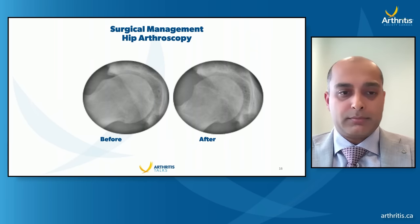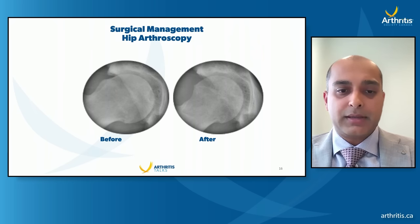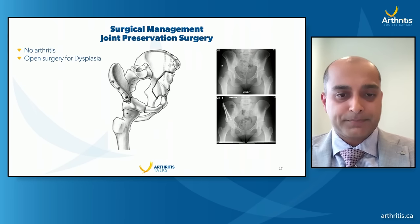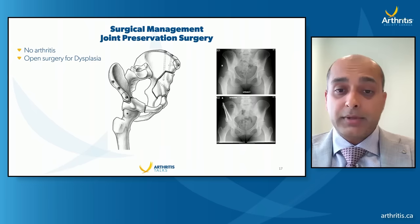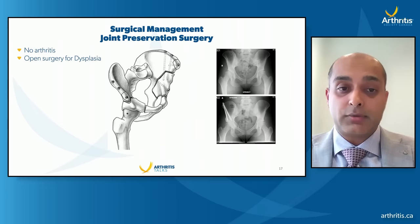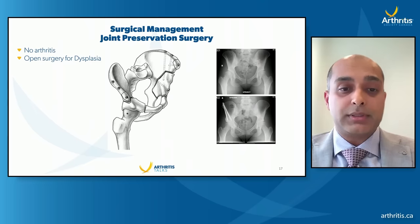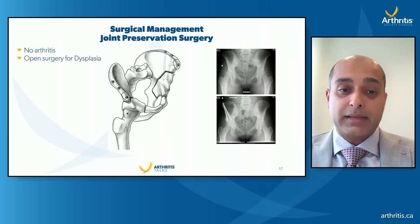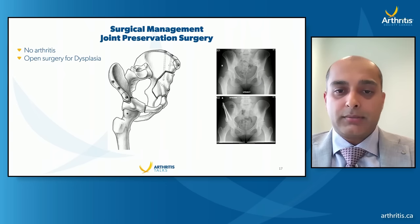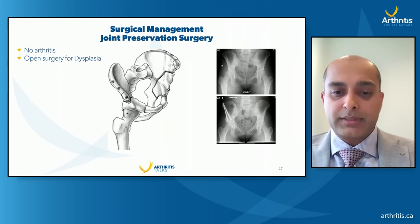Post-operative views show how the femoral head has been properly shaped to move well inside the hip joint. For dysplasia, we must ensure arthritis is not already present — these are pre-arthritic situations. The surgery for dysplasia requires open surgery to reorient the socket: the pelvis is cut in a few places, allowing us to reorient the socket and place it appropriately on top of the femoral head, then fixed with screws.